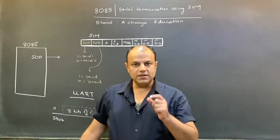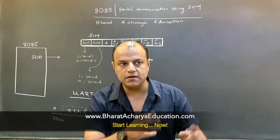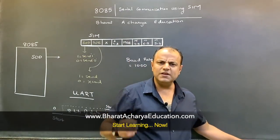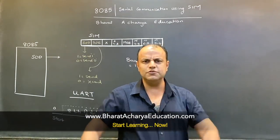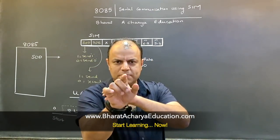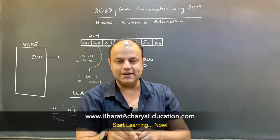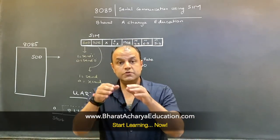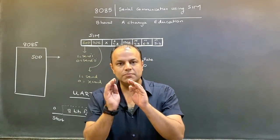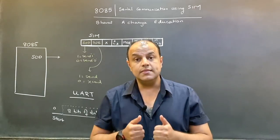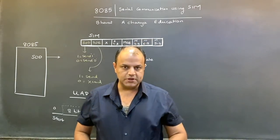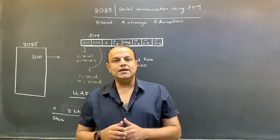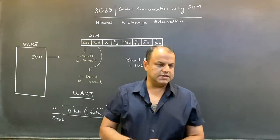On this pin, you do serial communication. Serial communication means you're sending one bit at a time. When you send the whole byte or multiple bits at a time, that's called parallel communication. When you do communication bit by bit, that's called serial communication.